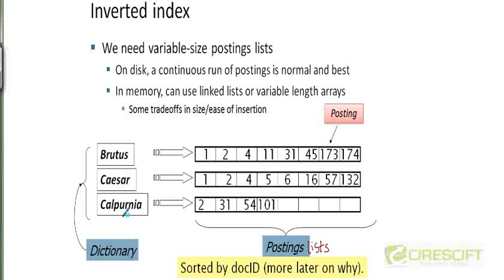In a later chapter we will see that people also use more complex data structures — b-trees, hash tables, and so on — for implementing the dictionary. Basically, what you need is that given a term, you can quickly find where that term is located in the dictionary so that you can follow the pointer to the postings list for that term. But we will leave that for later.